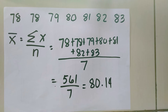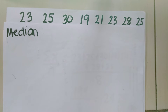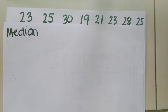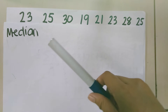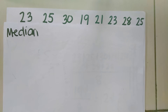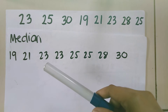Next, let's move on to the median. Median is sometimes called the midpoint value — it is the middle value or the middle data of a set. To find the median, we are going to arrange our data first from least to greatest.